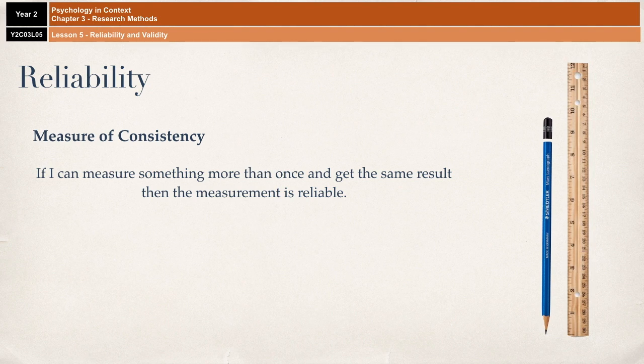So if you take for example a ruler and a pencil, and if I wanted to measure the length of that pencil, I will know that my ruler is consistent and reliable if I get the same measurement every time I measure it. There should only be a change in the measurement if there is a change in the object. So if I sharpen my pencil and it gets shorter, then the object has changed and therefore the length will change. But if nothing changes in the object, then the length of it should remain consistent.